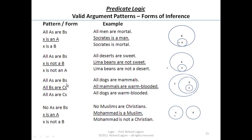Moving on to our third pattern: all A's are B's, all B's are C's, therefore all A's are C's. Example: all dogs are mammals, all mammals are warm-blooded, therefore all dogs are warm-blooded. This looks like transitivity from math. The circle of A is contained within the B circle, the B circle is wholly contained in the C circle, therefore the A circle has to be in the C circle. Good pattern of inference.